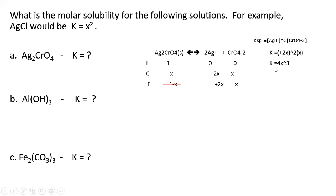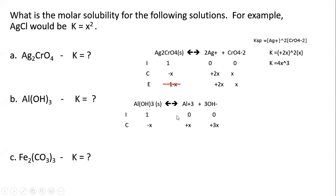If you know the Ksp — the equilibrium constant for the dissociation of silver chromate — you can calculate its molar solubility. For aluminum hydroxide, we write its dissociation: Al(OH)₃ breaks apart into Al³⁺ and three OH⁻ ions. Initially the reactant is set to 1 (solid). For every one mole of Al(OH)₃ that dissociates, we produce one mole of Al³⁺ and three moles of OH⁻. The Ksp expression is [Al³⁺][OH⁻]³, giving Ksp = x × (3x)³ = 27x⁴.